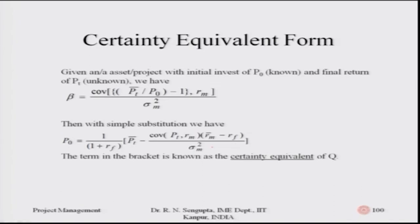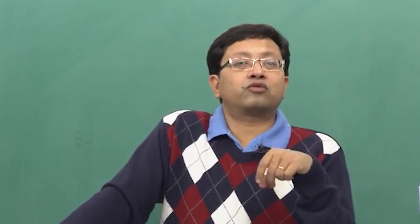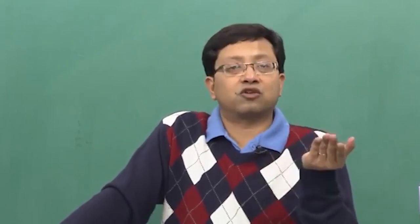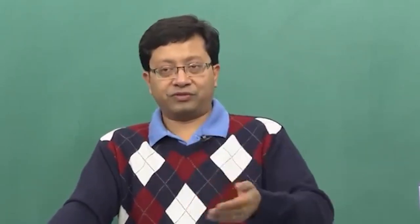Looking at the denominator and numerator of the equation: the denominator is the market risk in terms of standard deviation or variance. The numerator is the covariance between the rate of return for a project and the market. Beta is the ratio of the covariance of that particular project with respect to the market divided by the overall variance of the market — because the covariance of the market with itself is the variance, since the correlation coefficient of any random variable with itself is one.